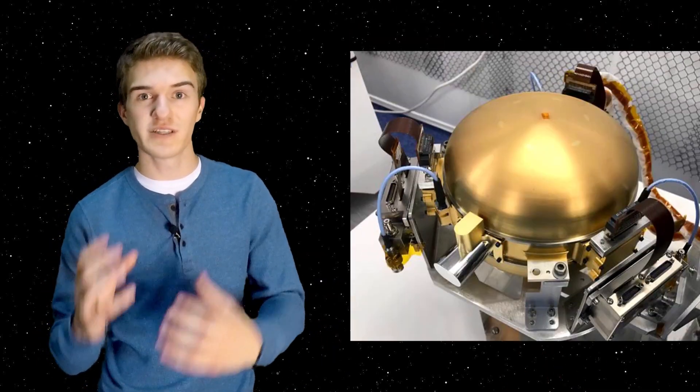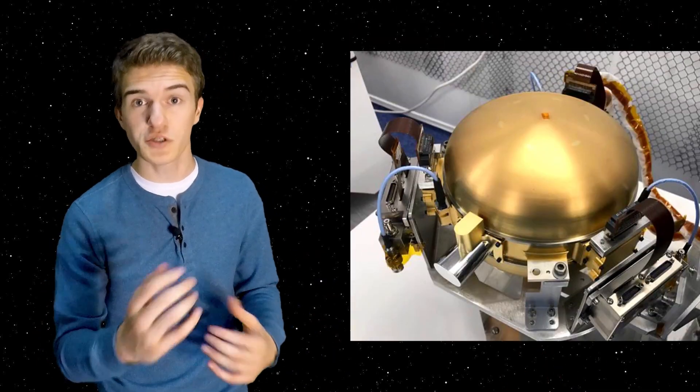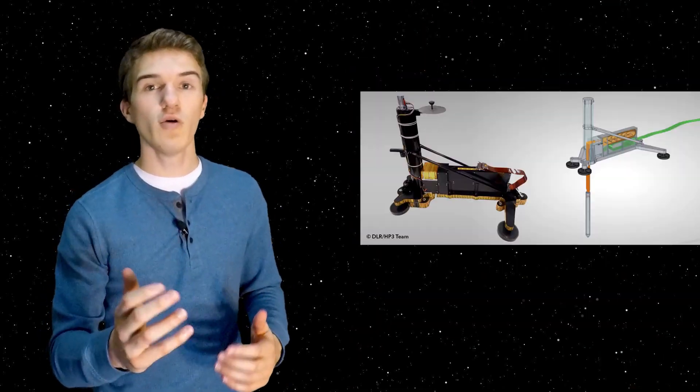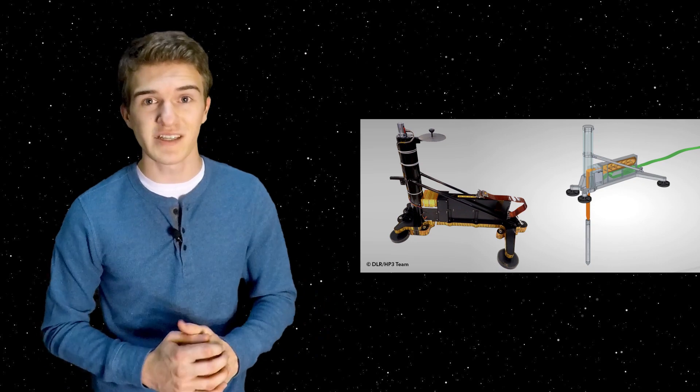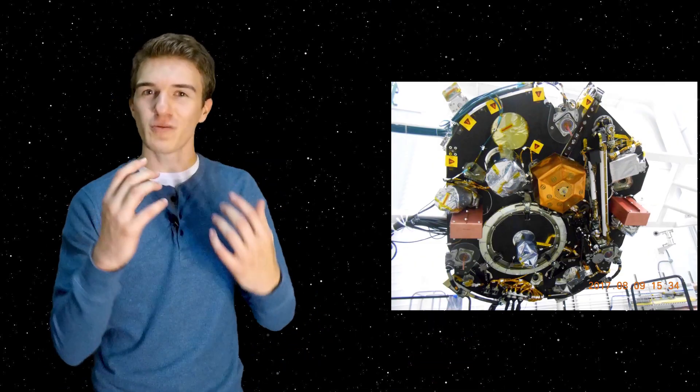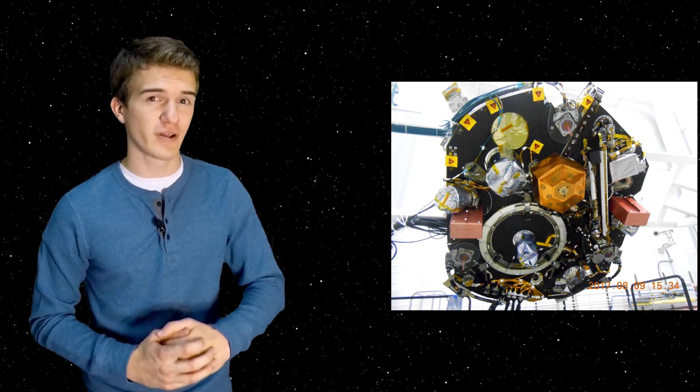Doing the seismometer to see what's happening underneath the surface and how many Mars quakes there are. Using the probe that goes 5 meters below the surface to deduce how much heat is actually leaving the system. And lastly, detecting the wobbling motion of the planet to determine whether or not there is a lot of liquid underneath the surface.